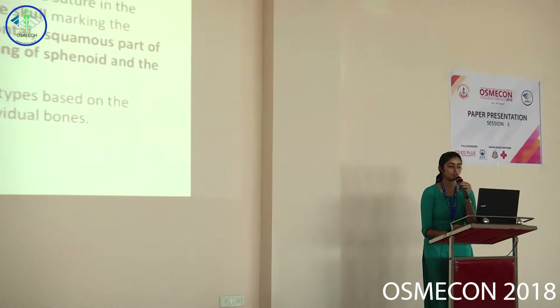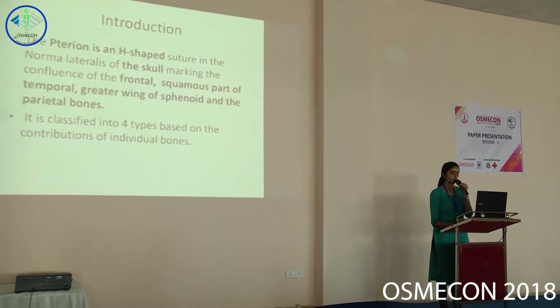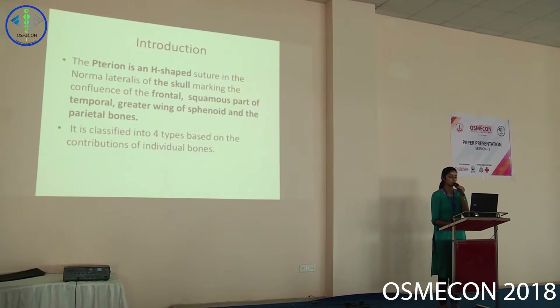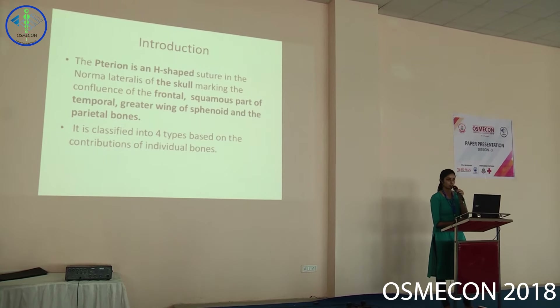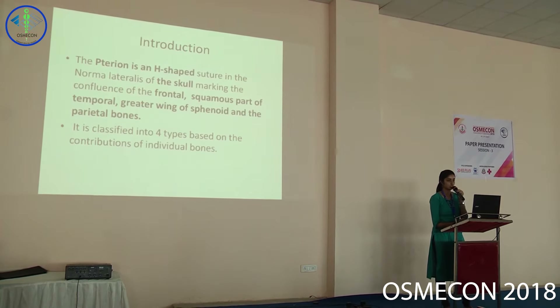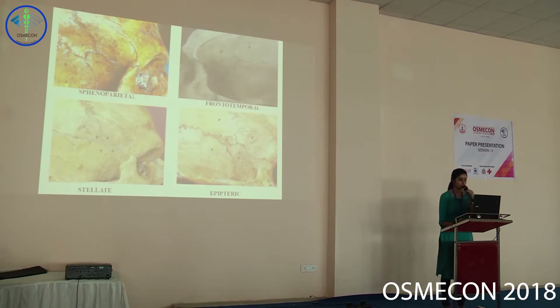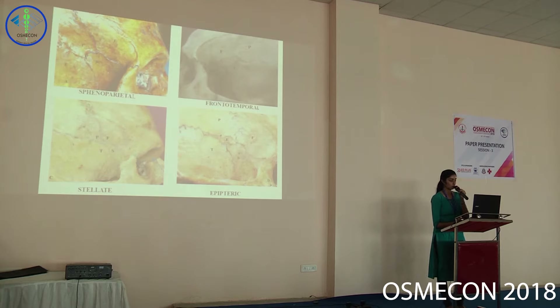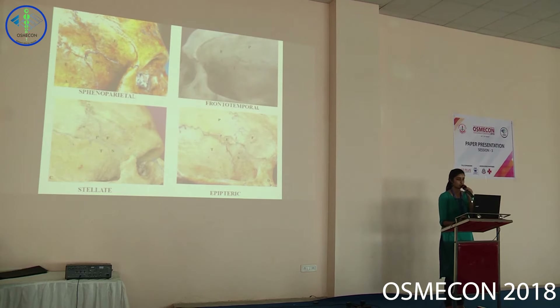The Pterion is an H-shaped suture in the norma lateralis of the skull, marking the confluence of the frontal squamous part of the temporal bone, the greater wing of the sphenoid, and the parietal bones. It can be classified into four types based on the contributions of these four bones: sphenoparietal, frontotemporal, stellate where all four bones meet at one point, and epiteric where an extra bone is present between all four bones.